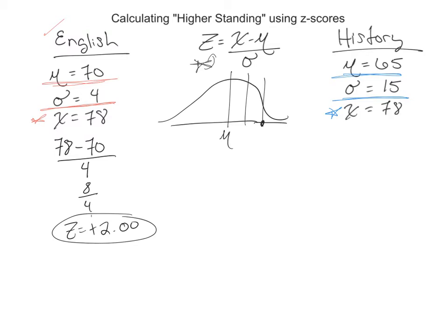Let's see how you did in history. Using the exact same score, 78, that's your raw score, minus 65 this time, because the average was a little bit lower in your history class, and then standard deviation of 15. So we go 78 minus 65, 13 divided by 15.